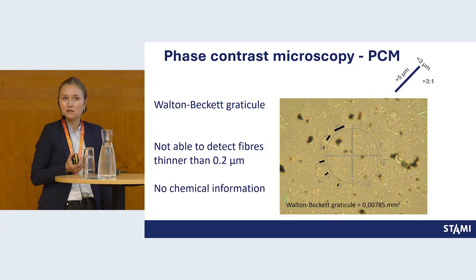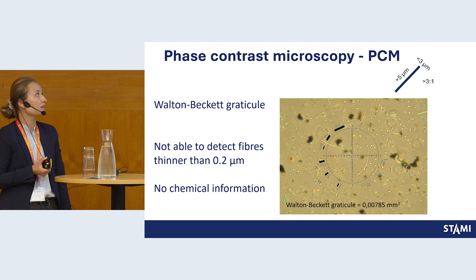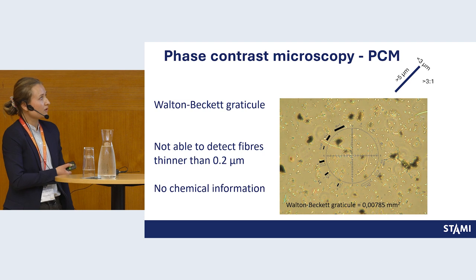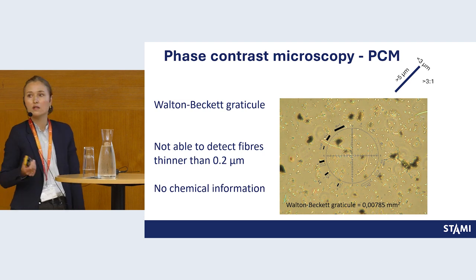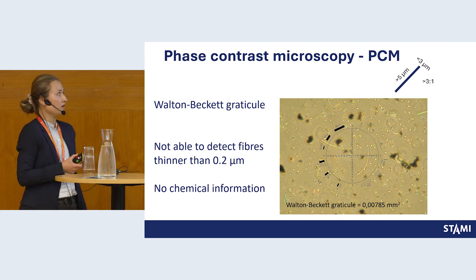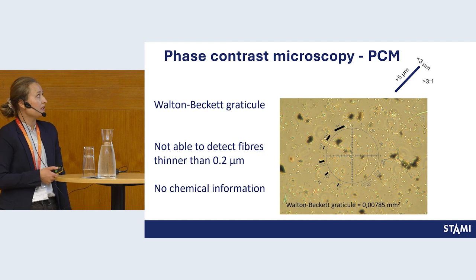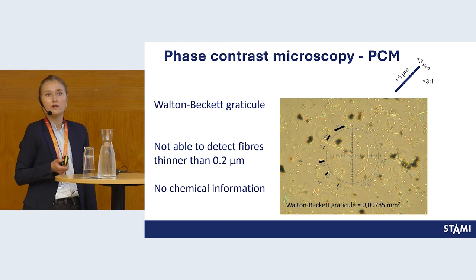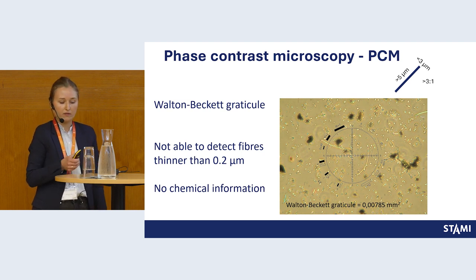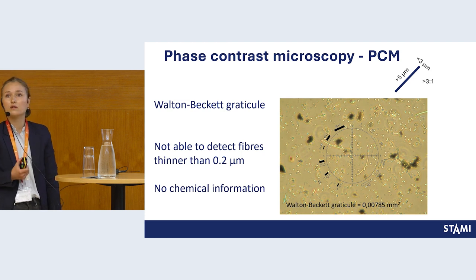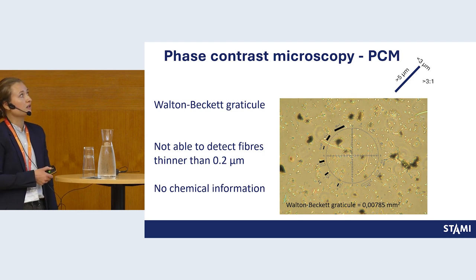I will go into the three methods. Within these techniques you also have different standards you can use when counting. The most used, at least historically, is the PCM method — the phase contrast microscope. You can see here a counting field, and you count asbestos fibers according to certain rules, covering a defined area of the filter. The limitation is that you cannot detect fibers thinner than 0.2 micrometers because you are limited by the wavelength of light, and you have no chemical information — so you are counting fibers, not specifically asbestos fibers. This is the fiber definition that is used.